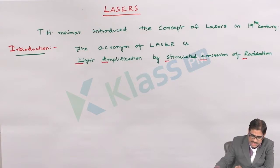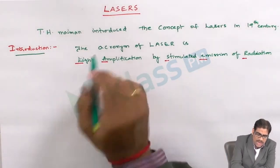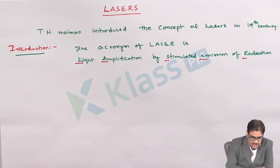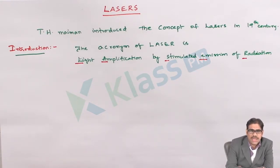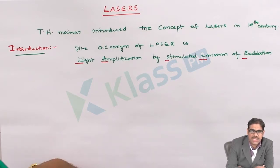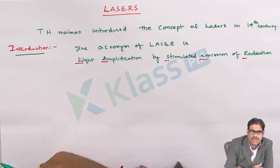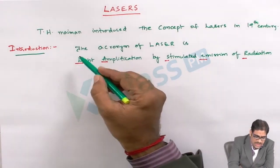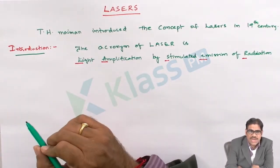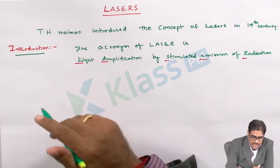Now let us try to understand about light. Light is nothing but certain amount of particles which are grouped together, which is transformed in the form of energy, which is getting radiated out. So that is what we normally understand about light.